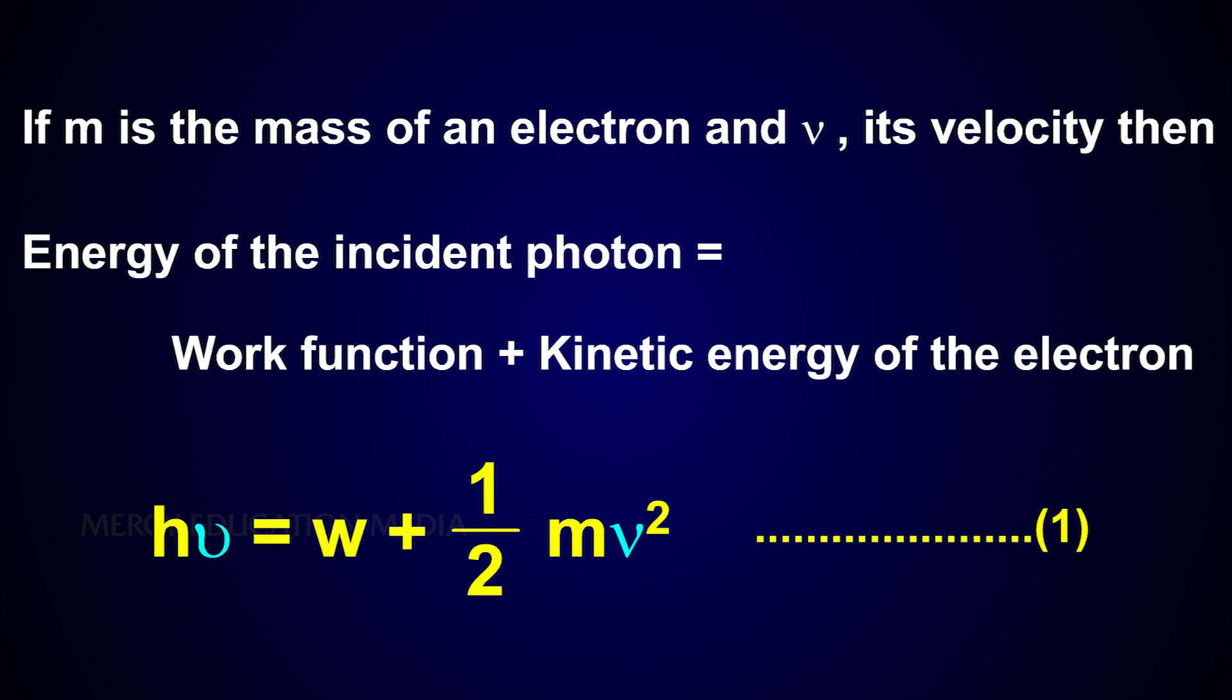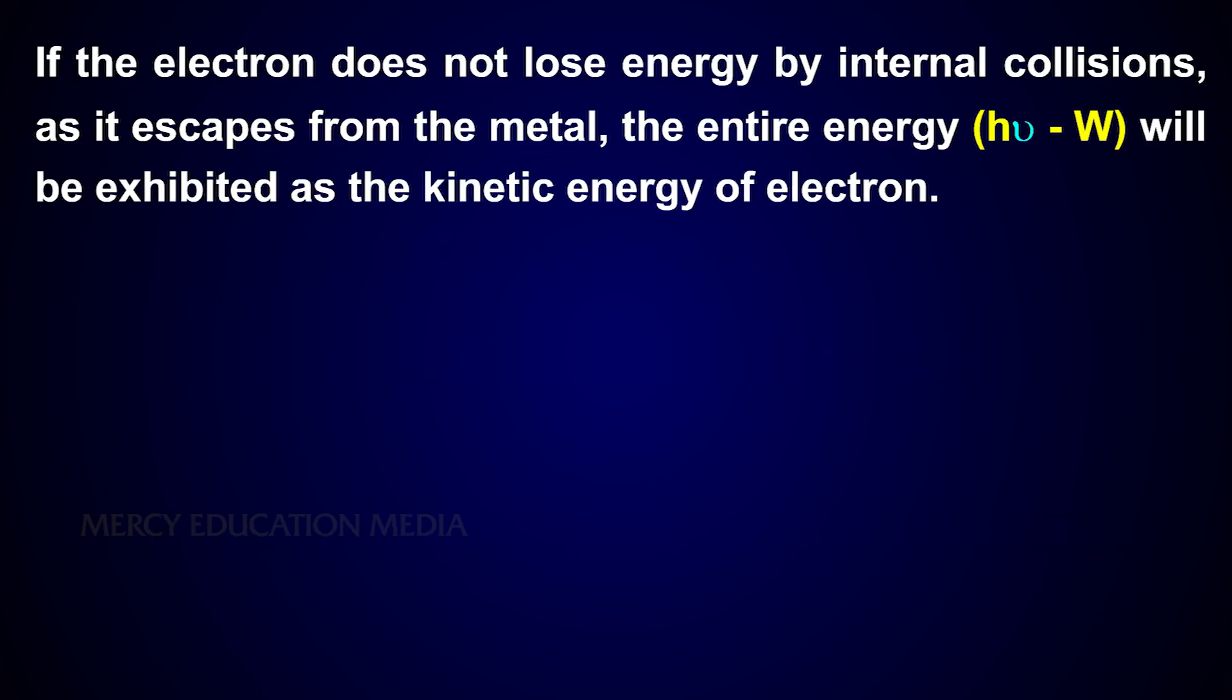hν = W + ½mv². This is the first equation. If the electron does not lose energy by internal collisions as it escapes from the metal, the entire energy, that is hν - W, will be exhibited as the kinetic energy of the electron.